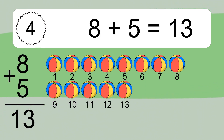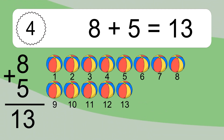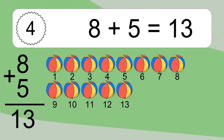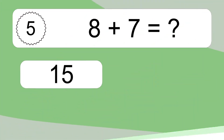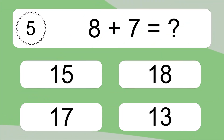1, 2, 3, 4, 5, 6, 7, 8, 9, 10, 11, 12, 13. Let's count it. 1, 2, 3, 4, 5, 6, 7, 8, 9, 10, 11, 12, 13. 8 plus 7 equals what?